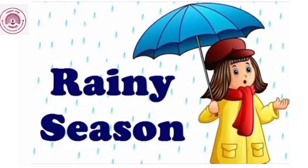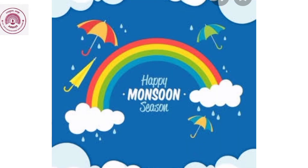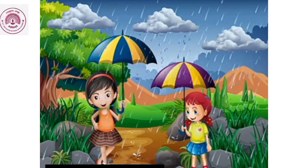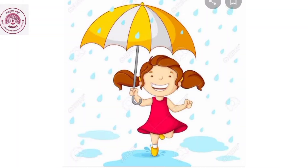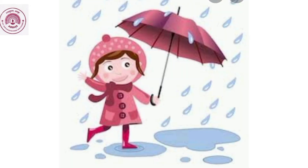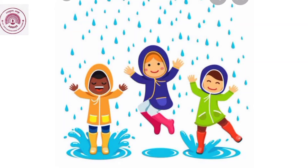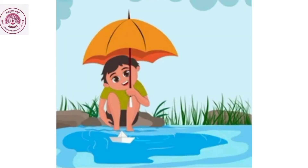Rainy season. Rainy season is also called monsoon. During rainy season, the sky looks cloudy and it rains almost every day. We see rainbow, dark clouds, and rain. We use umbrellas, gumboots, and raincoat during rainy season. Children love to play in water and make paper boats. It starts from the month of June and lasts till the month of September.